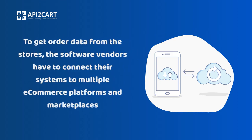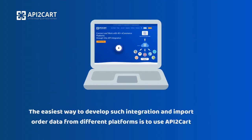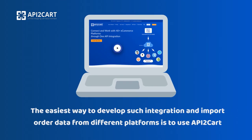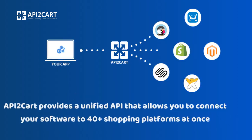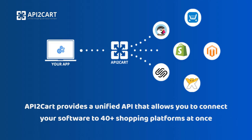Therefore, to get order data from the stores, the software vendors have to connect their systems to multiple shopping platforms and marketplaces. The easiest way to develop such integration and import order data from different platforms is to use API2Cart.